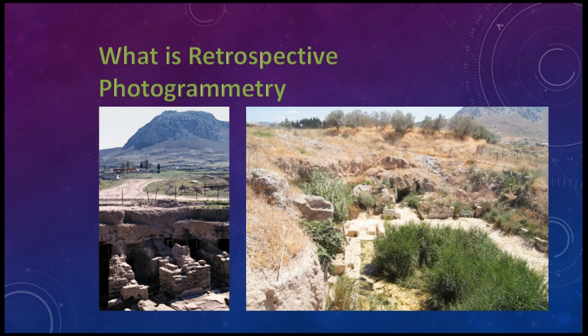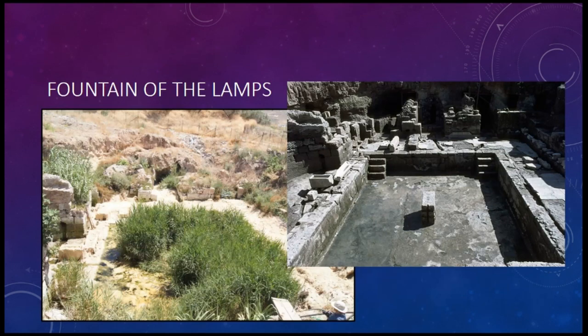In talking to Professor Wiseman, I found that he had amassed a large archive of photos while doing the excavations. I was already doing photogrammetry in Corinth and asked him if I could have access to his archive, because I thought perhaps we could produce some three-dimensional models using older photos. It was a massive athletic complex with baths and a swimming pool — called the Fountain of the Lamps because when they excavated it, they found over 3,000 perfect oil lamps that had been used ceremonially.